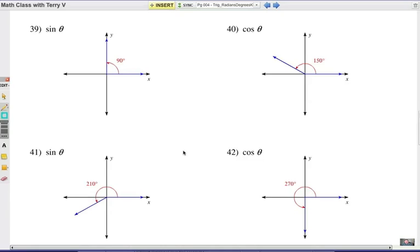Alright, 39 through 42. The angle's given and you find the given values for the trig function. Go ahead and hit pause.